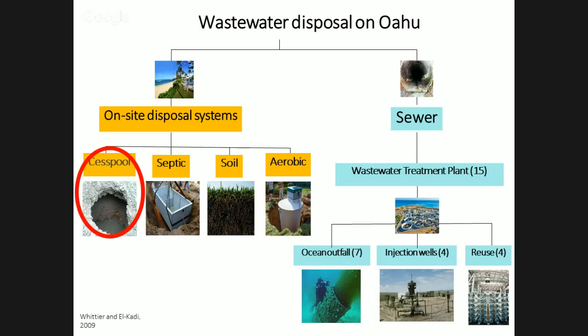What I'm focusing on today are on-site disposal systems, specifically cesspools. If you're not connected to a sewer, you'll have an on-site disposal system, and cesspools are the most common on Oahu. A cesspool is essentially an underground pit with no containing unit, so waste is free to infiltrate into the unsaturated zone and back into groundwater. We also have septic systems, soil units, and aerobic units, which offer more treatment, but today's talk focuses on cesspools.